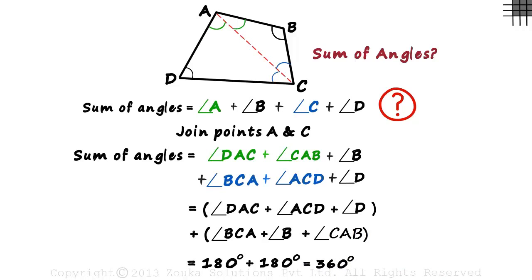So the sum of interior angles of a quadrilateral equals 360 degrees.